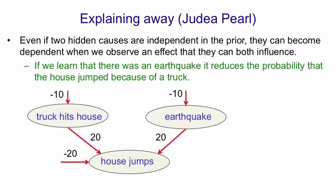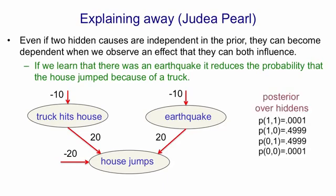So if the house jumps, there's basically an even chance that was because of a truck or because of an earthquake. The posterior actually looks something like this. There's four possible patterns of hidden causes, given that the house jumped. Two of them are extremely unlikely.